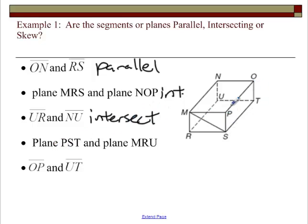Plane PST, we're talking about the right-hand side. And plane MRU, the left-hand side. Right and left side don't cross. So those are parallel. OP and UT. OP is this line right here. UT is down below. One of them is dotted, which means they're actually not crossing. Those are skew. So hopefully you got all five.